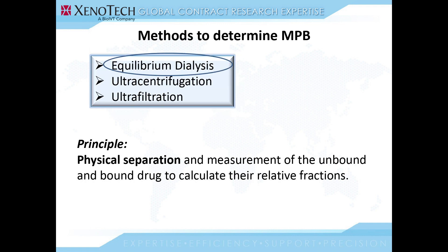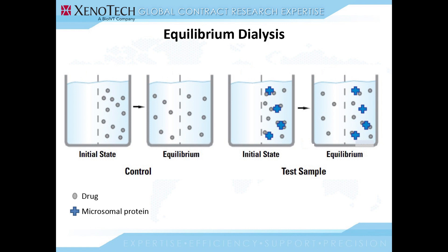First, I'll discuss what equilibrium dialysis is. In equilibrium dialysis, there are two compartments which are separated by a semi-permeable membrane. If drug in solution is added to one chamber, over time it diffuses to the other side such that at equilibrium, equal concentrations of the drug are present on both sides of the chamber. When the drug is in the presence of microsomal protein, the drug immediately starts to bind to the microsomal protein and the unbound drug migrates to the other side through the semi-permeable membrane.